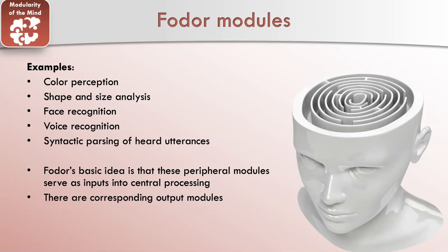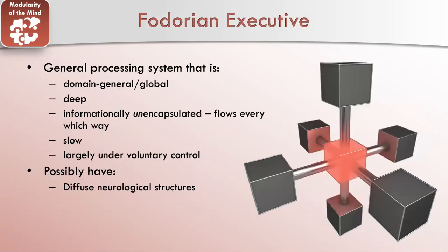For Fodor, what's going on is that these modules process the world around you and they serve as inputs to central processing — what you might also call the Fodorian executive. This is a general processing system, and in a lot of ways it's the opposite of these modules. It's domain general, global, deep, unencapsulated, slow, and largely under voluntary control. You might draw an analogy between this and the behavioral economics discussion, where we talked about fast and slow systems — I think there's an interesting analogy there, though I don't know how far to take it.